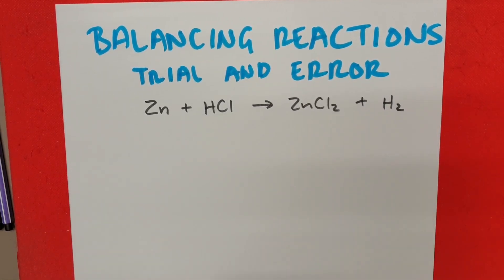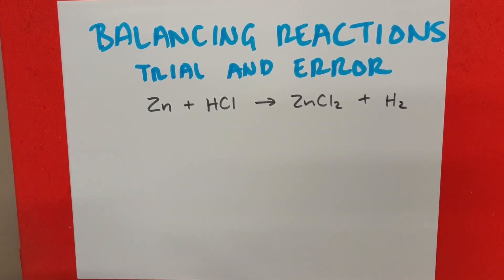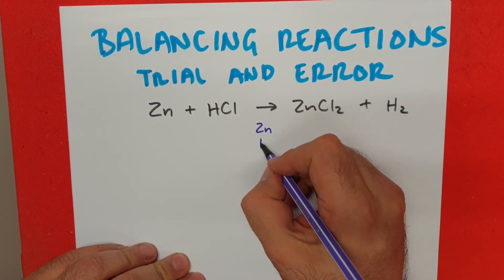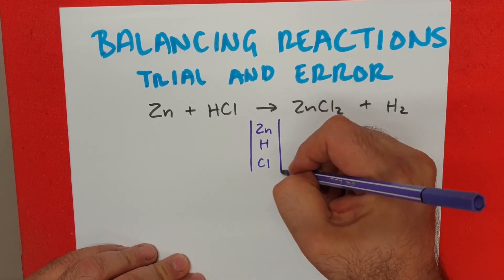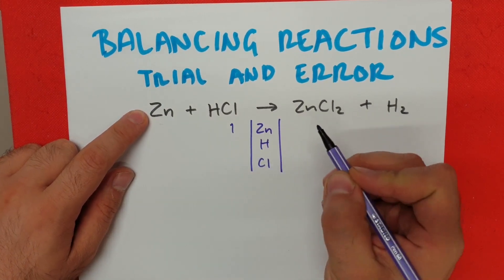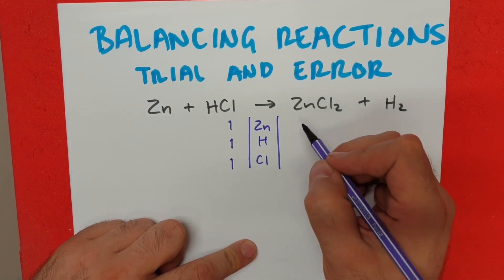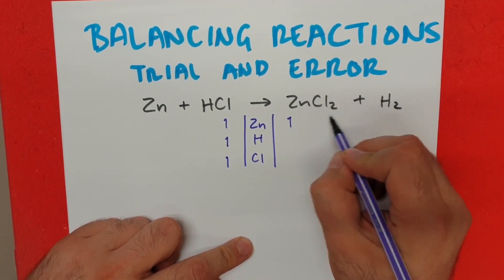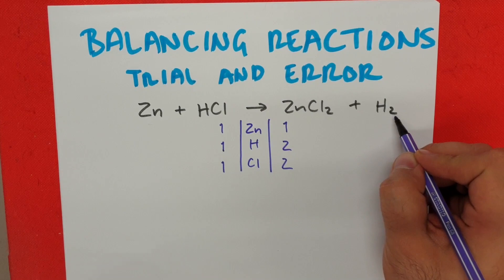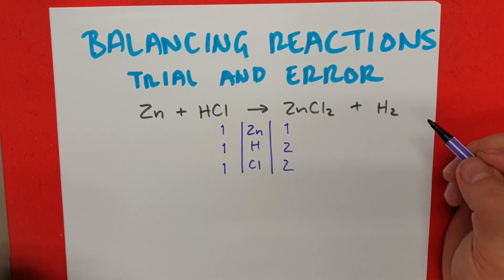We have our four different chemicals — our reactants and our products. The simplest way to do this is to write up a little inventory. We have zinc on both sides, hydrogen, and chlorine. On the reactant side: one zinc atom, one hydrogen atom, and one chlorine atom. On the product side: one zinc atom, two chlorines from the subscript two, and two hydrogens from the subscript two in the hydrogen molecule.